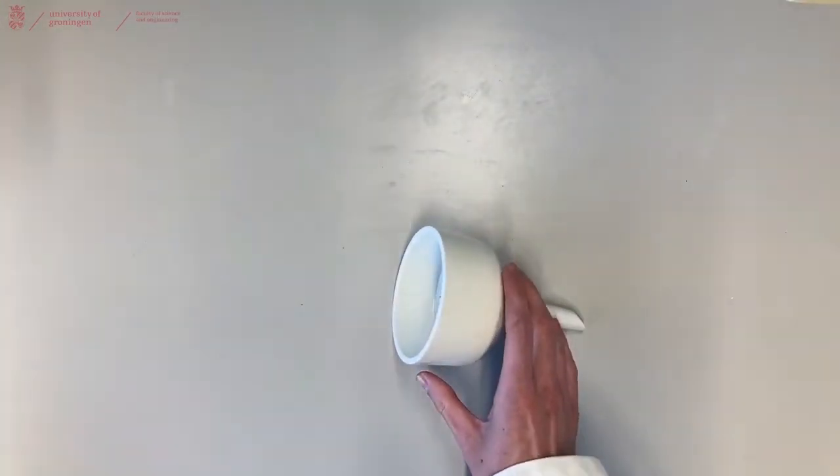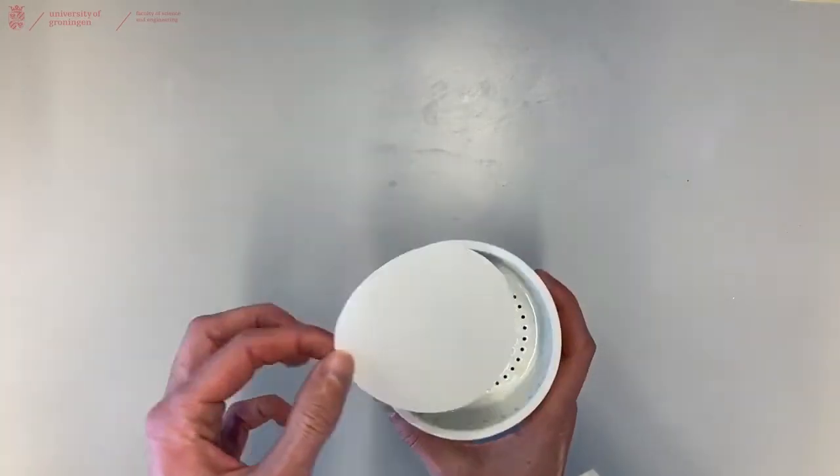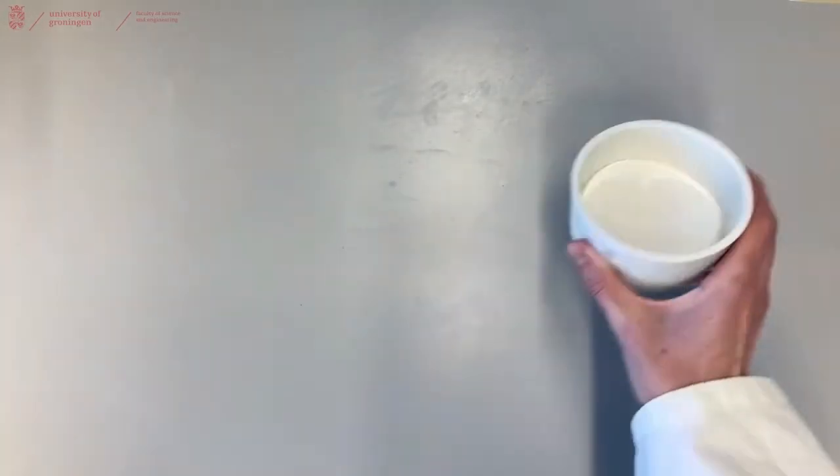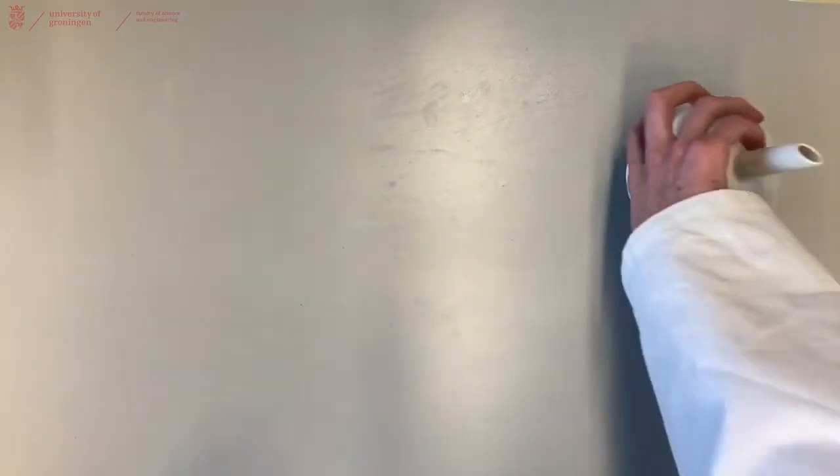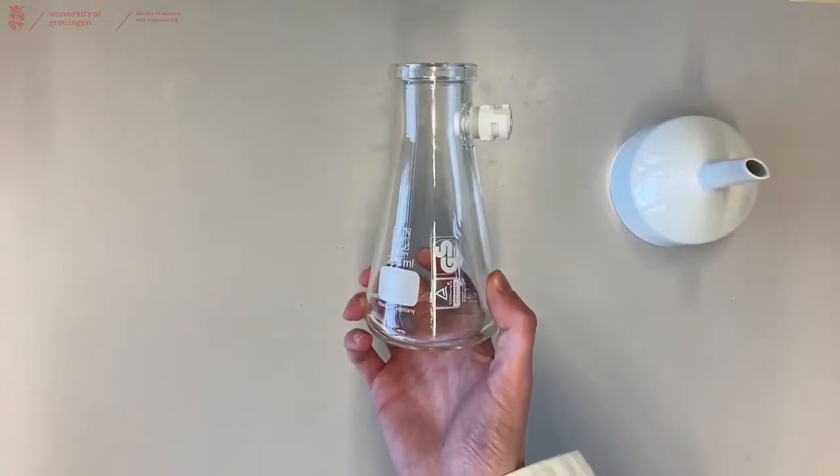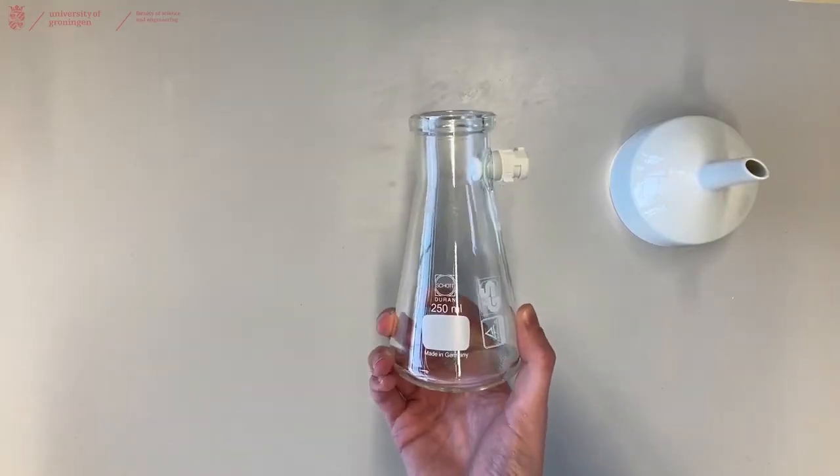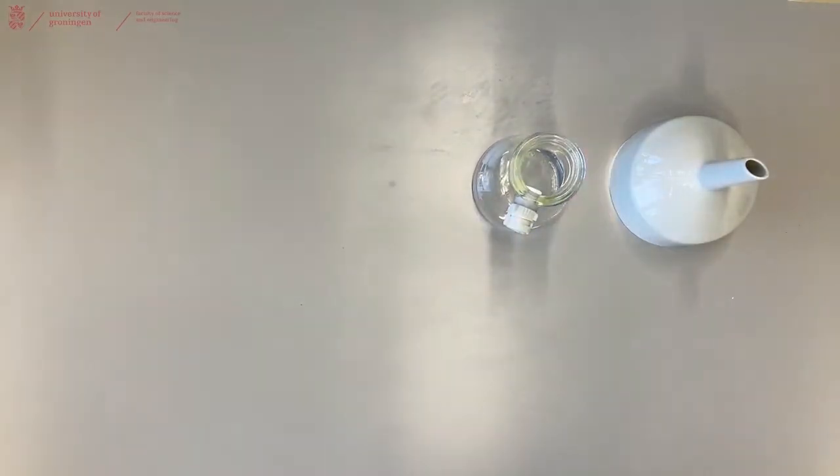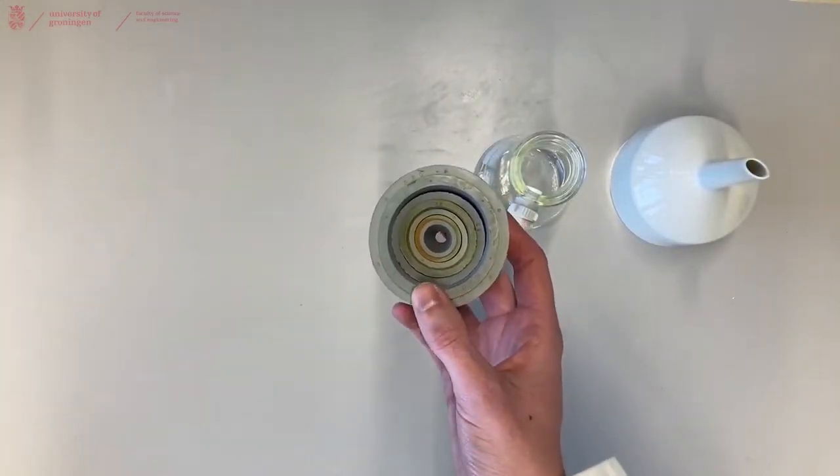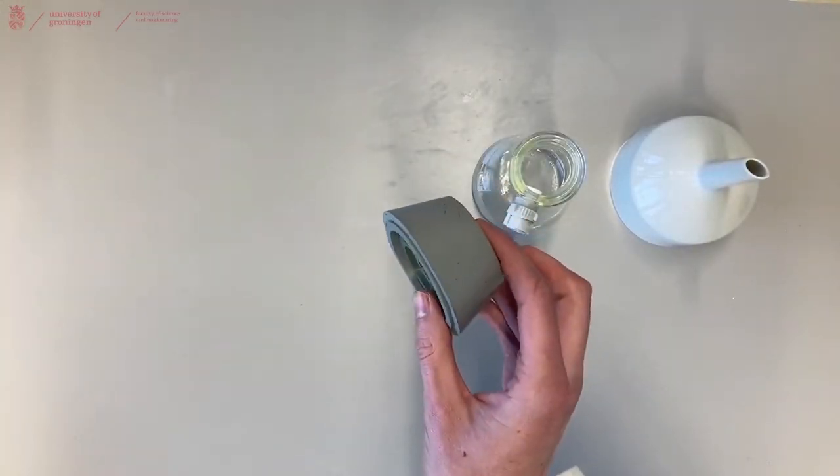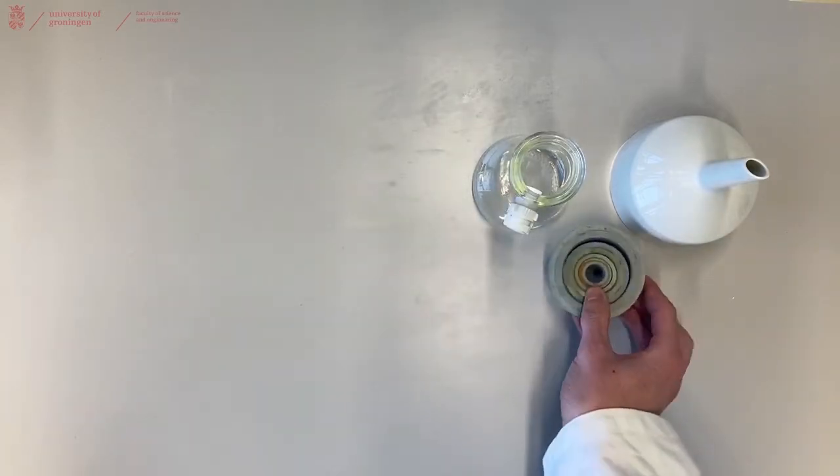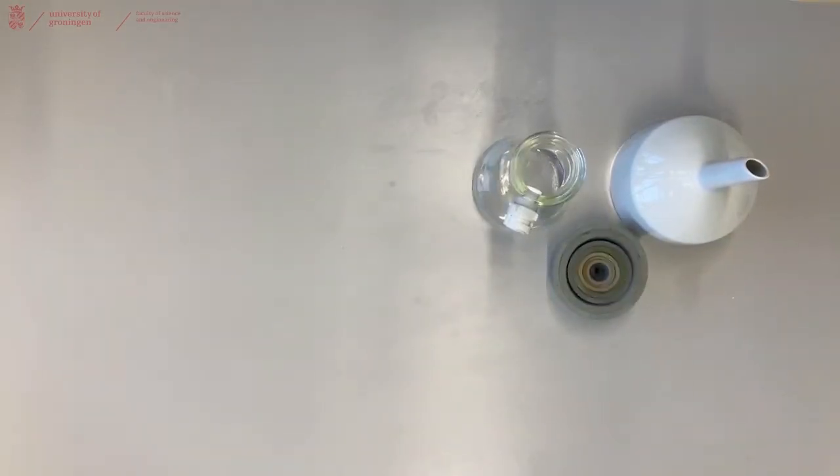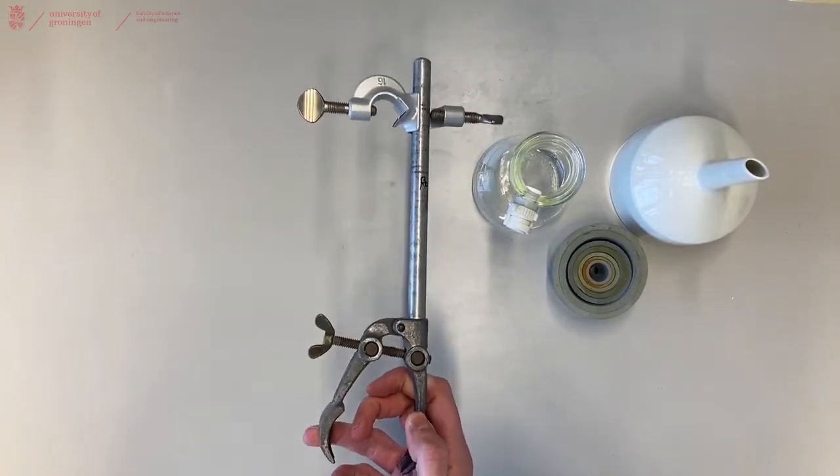For the Buchner funnel you will require a filter paper that fits inside your Buchner. You can collect the liquid in this filtration flask. To make sure that you have a proper vacuum seal between the Buchner and the filtration flask, you can use neoprene rings. During the filtration you will need to clamp your filtration flask to the fume hood using a normal clamp.